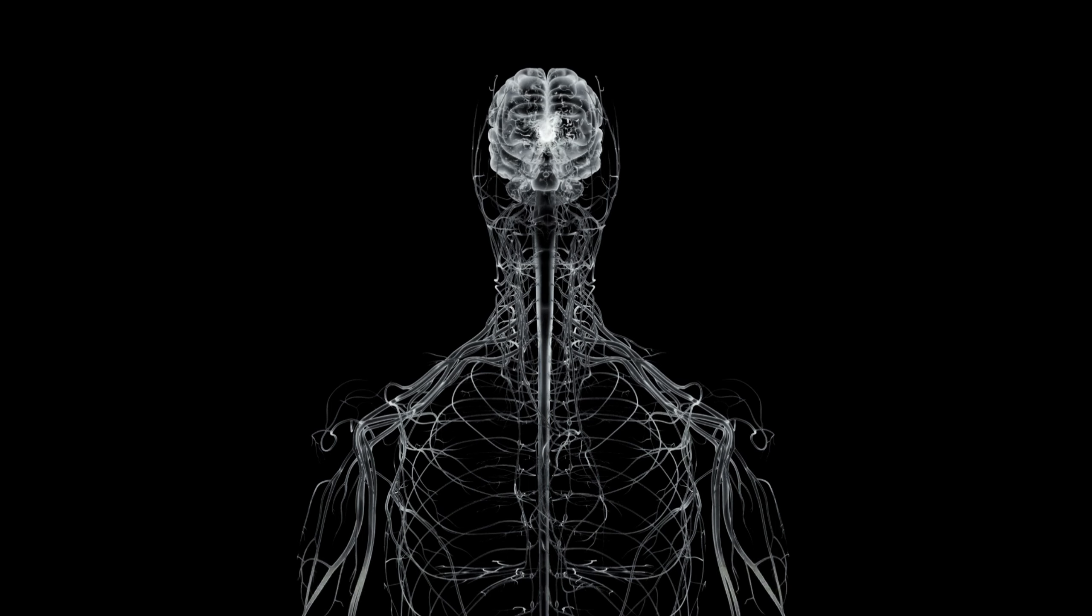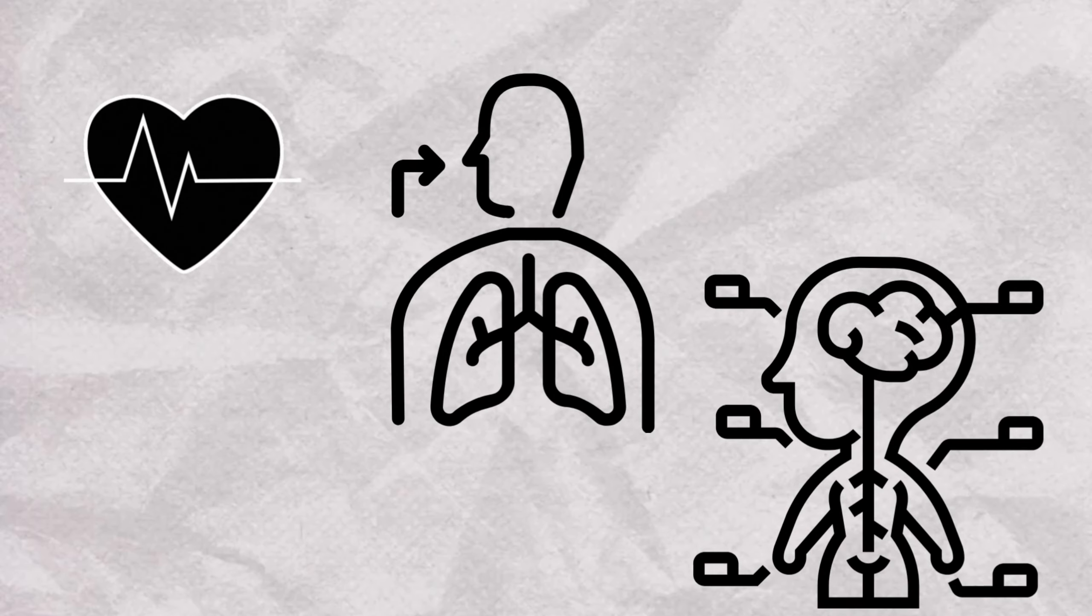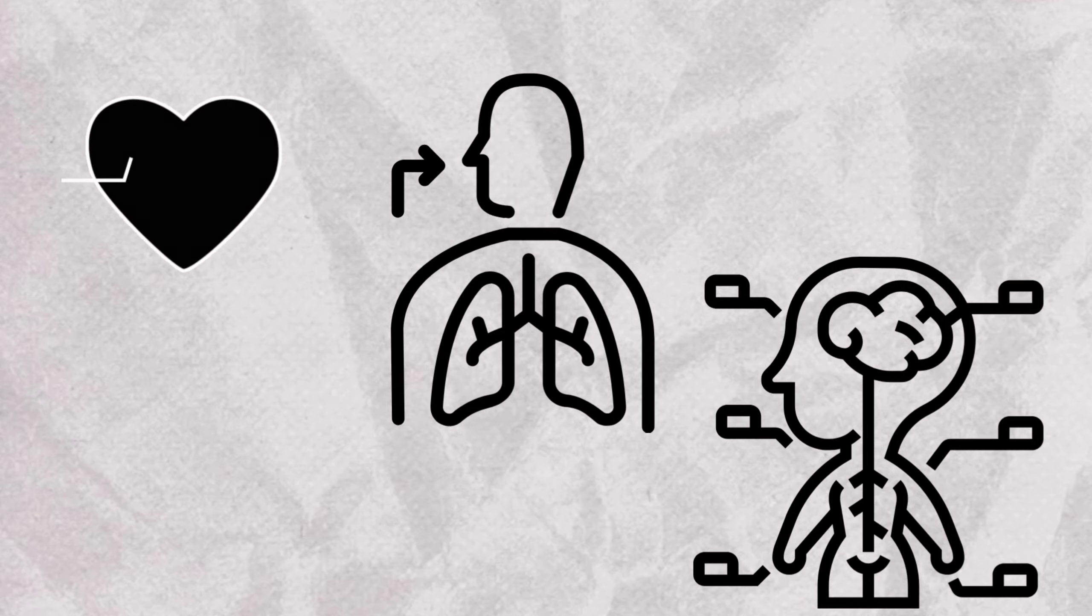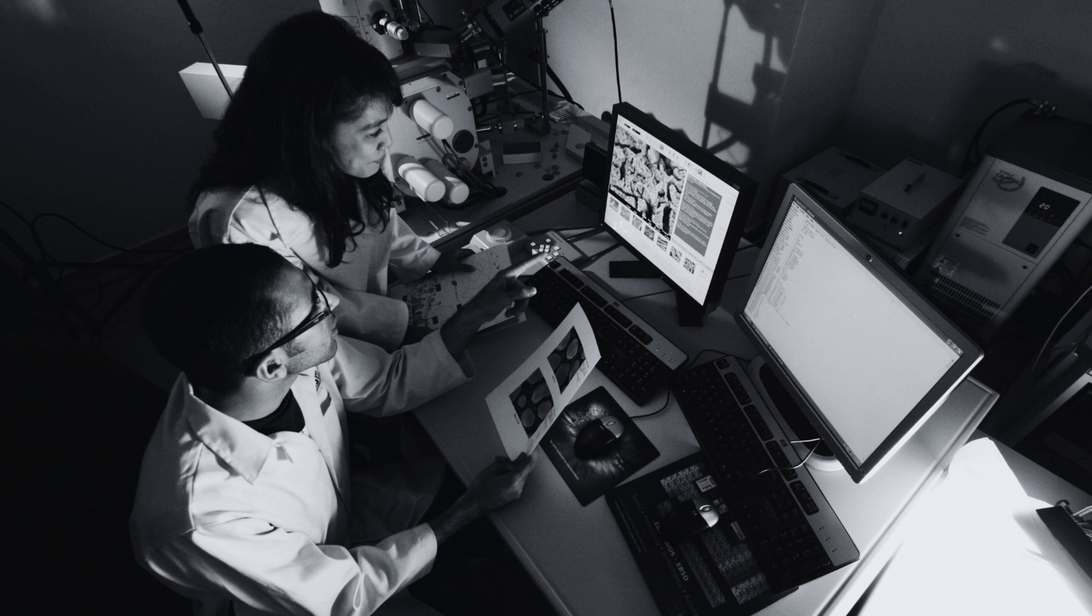The vagus nerve is part of our parasympathetic nervous system, often referred to as the rest and digest system. When stimulated, it increases what researchers term vagal tone, slowing our heart rate and respiration and effectively calming our nervous system. This is the body's built-in mechanism for self-soothing and promoting relaxation.